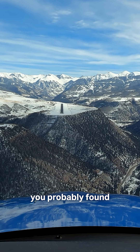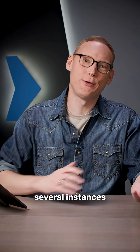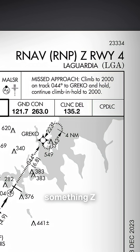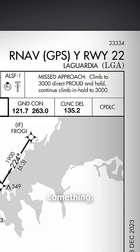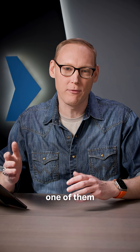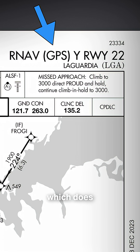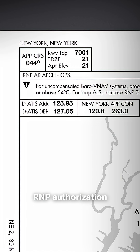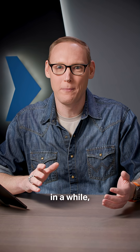If you're instrument rated, by now you've probably found several instances where you have procedures named something-something-Z, something-something-Y. Oftentimes that's the case because one of them is RNAV GPS, which does not require authorization to fly, and the other is RNAV RNP — RNP Authorization Required.